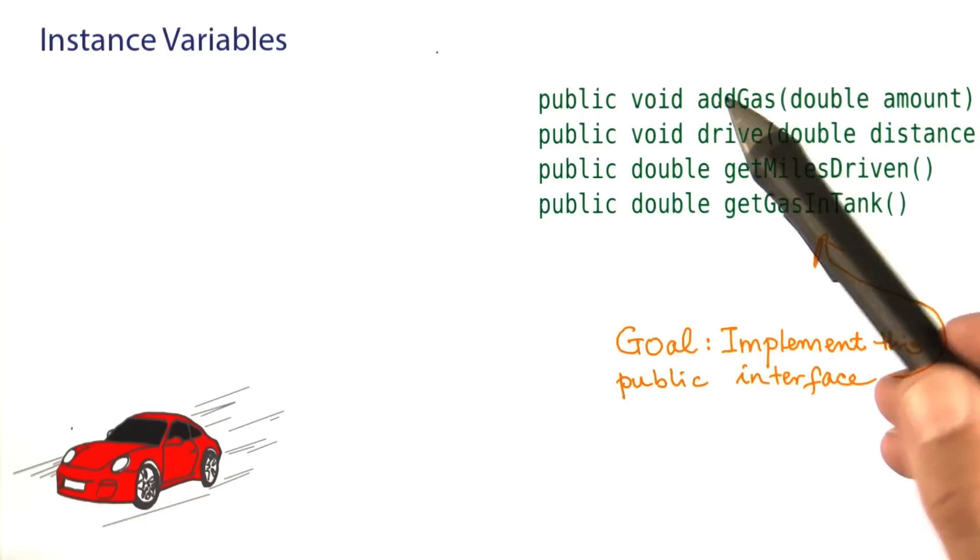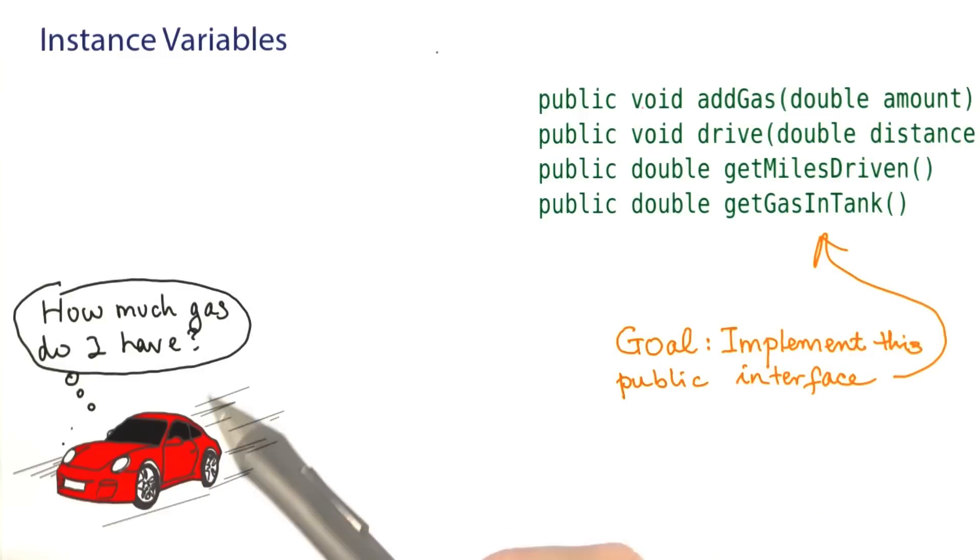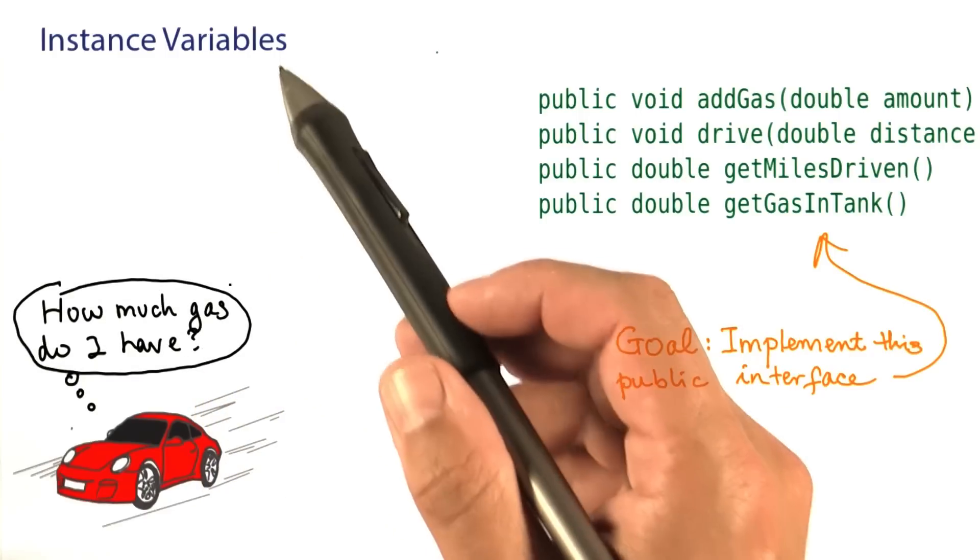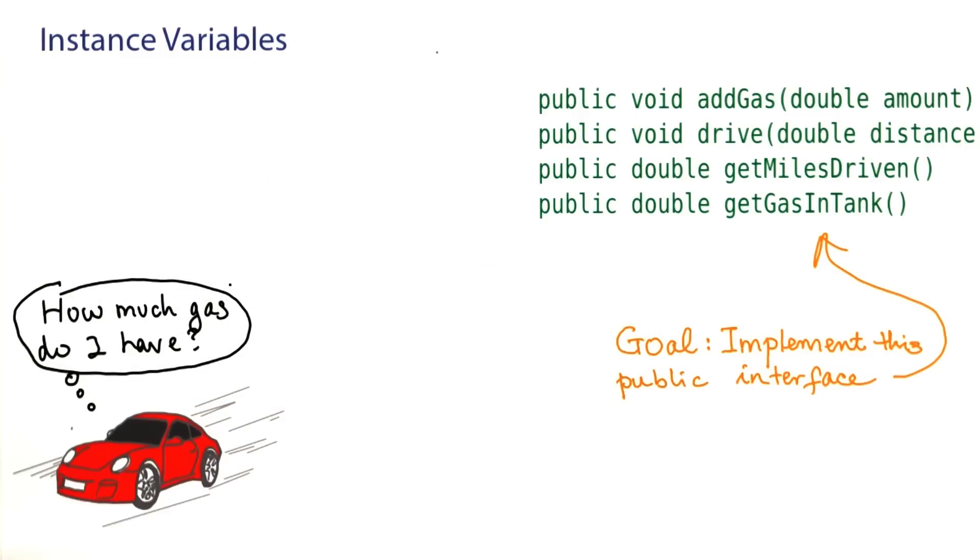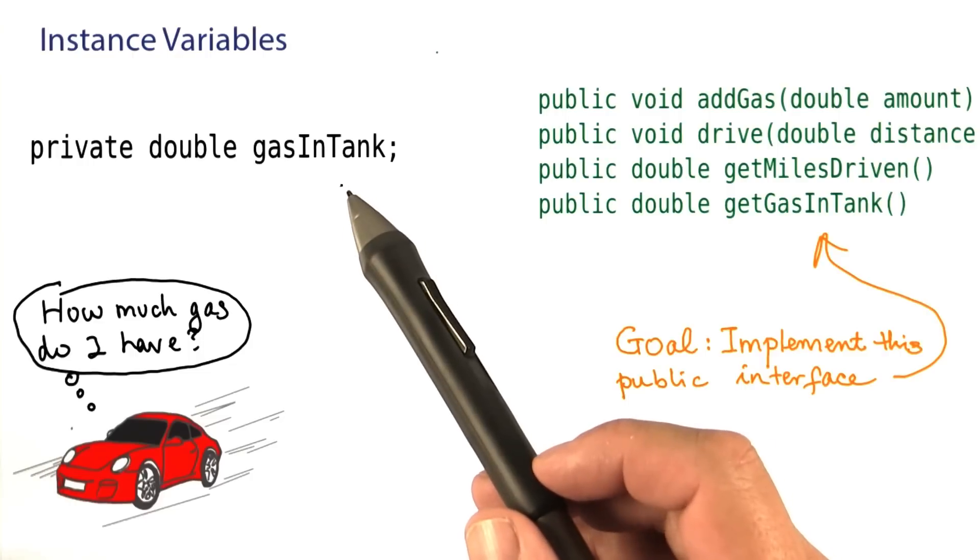In particular, in order to add gas, the car needs to remember how much gas it has. In Java, you use variables to remember anything. And here is how you write such a variable.